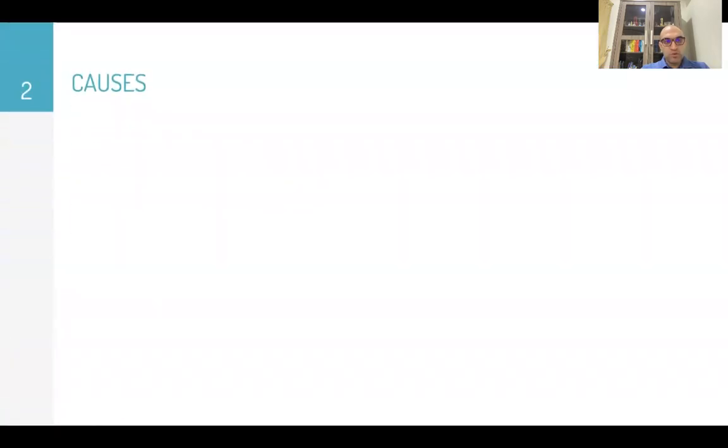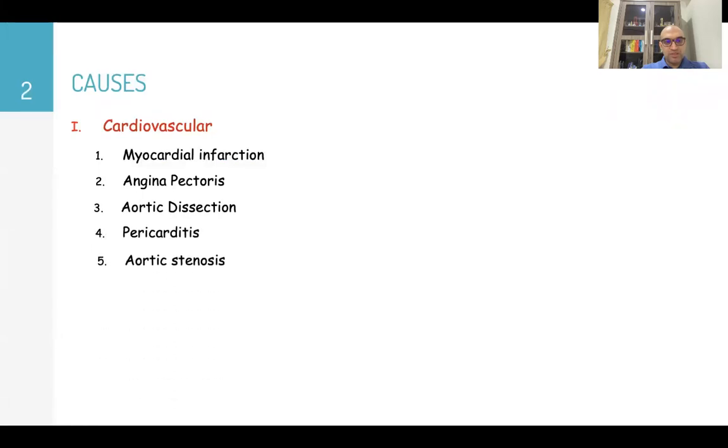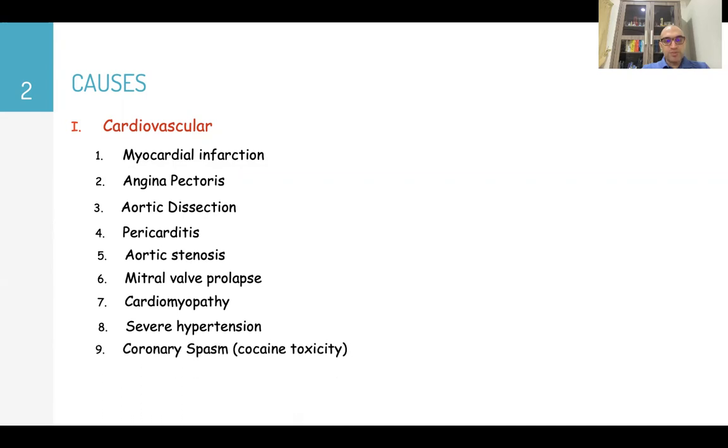First, we'll start with causes of chest pain. For cardiac or cardiovascular causes like myocardial infarction, angina, aortic dissection, pericarditis, aortic stenosis, mitral valve prolapse, cardiomyopathy, and severe hypertension might cause chest pain, coronary spasm like in cocaine toxicity.